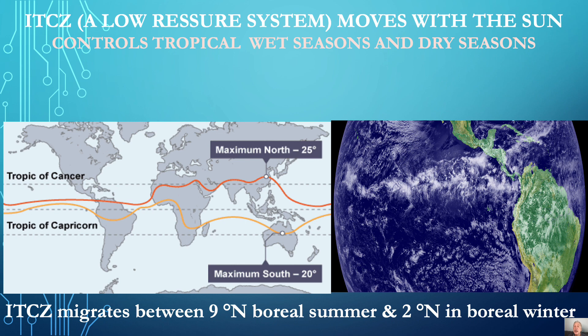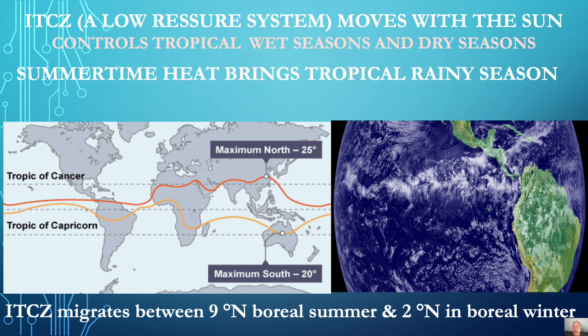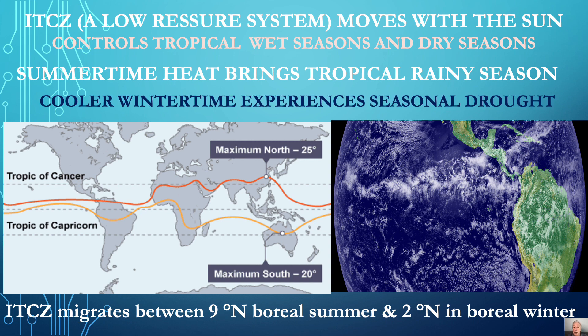The ITCZ is easily recognized from satellite imagery showing a belt of clouds encircling the earth. It moves northward and southward with the seasonal position of the sun and determines what tropical regions experience a wet season and what experience a dry season. In the northern hemisphere, as summertime warmth moves north, the ITCZ — seen in red — brings the rainy season to the northern tropics, while south of the equator, cooler temperatures experience seasonal drought.